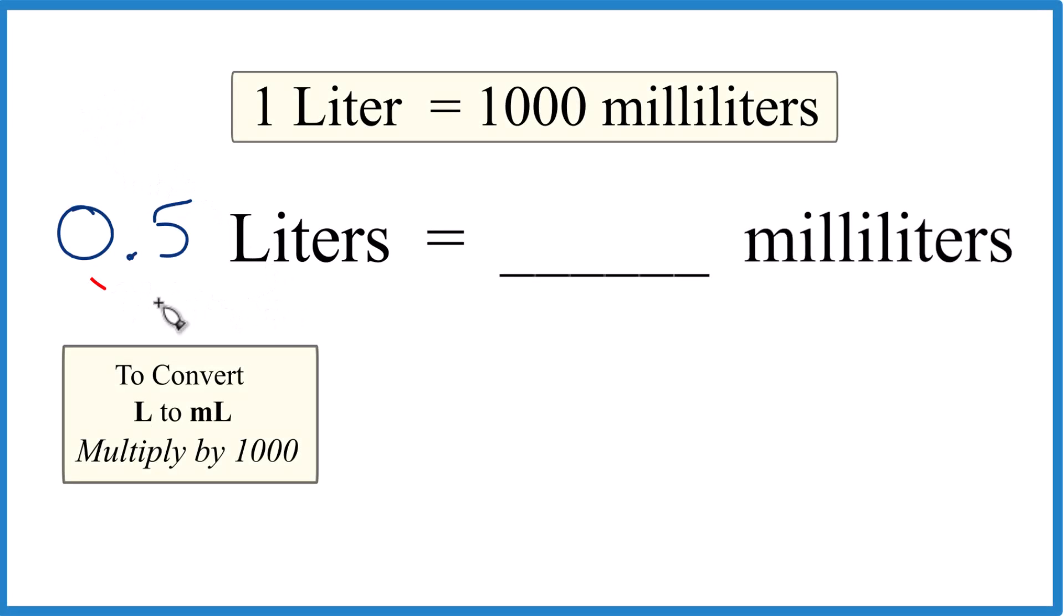Let's convert 0.5 liters to milliliters. And here's how we do it. One liter is a thousand milliliters. That's our conversion factor.